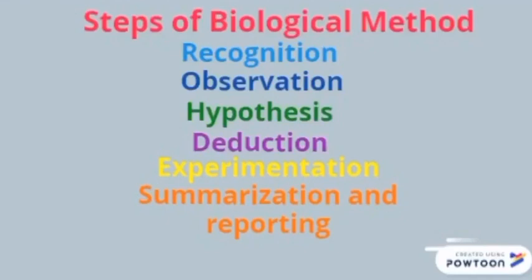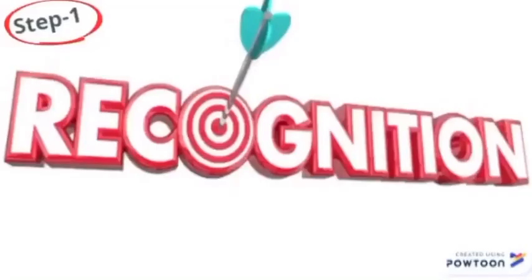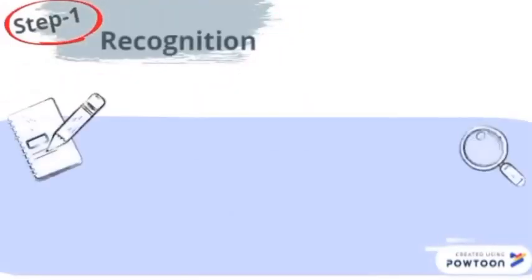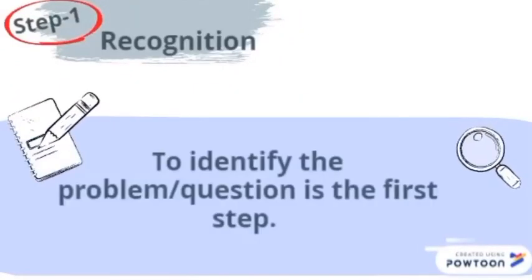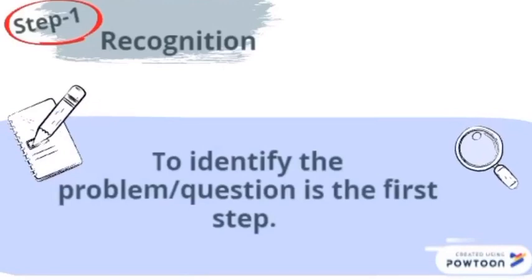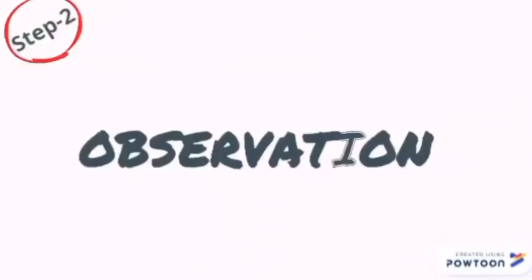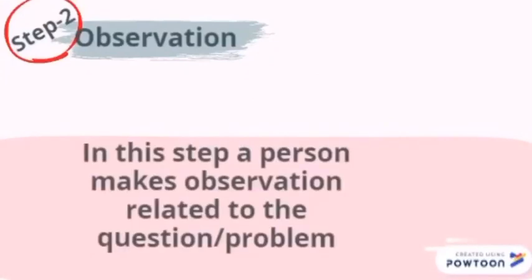Let's look at each step closely. Step one is recognition — in this step we identify the problem or question we are having related to living organisms. Step two is observation — in this step, observations are made related to the question or problem.